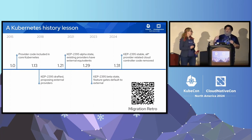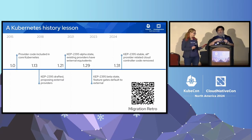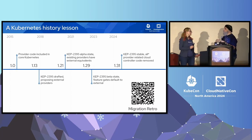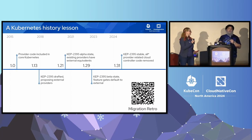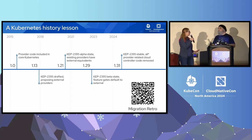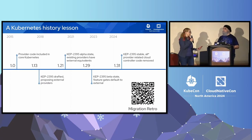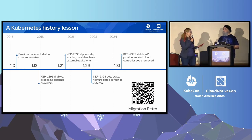Moving forward to the 1.13 release, looking through the history of Git issues, the Kubernetes community was already starting to interrogate itself about whether cloud provider-specific code should be in the core. We realized there were pros and cons, but as the proliferation of cloud providers continued, it really didn't make sense to have it embedded and mingled into the core.